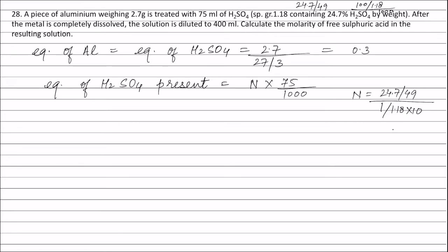Therefore, equivalents of sulphuric acid present = (24.7/49) × 1.18 × 10 × (75/1000) litres, and this equals 0.446 equivalents.